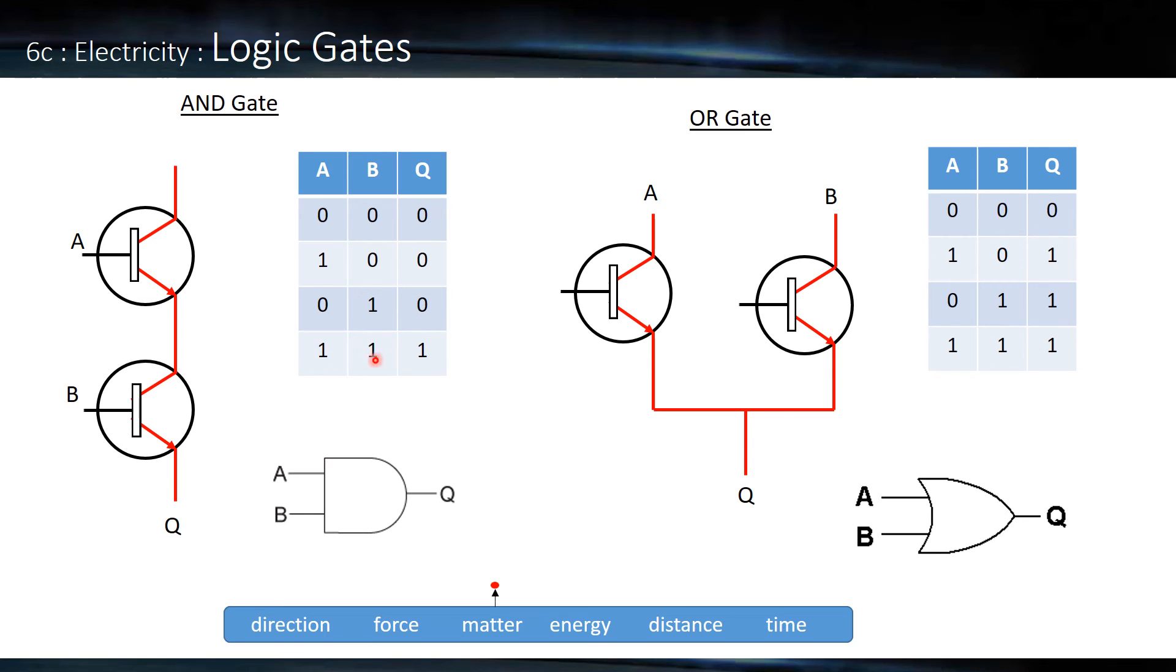Here, only when we have A and B do we get our result. Here it's A or B or both. We can see this also gives us a positive outcome.